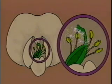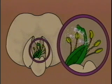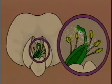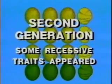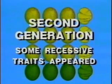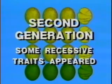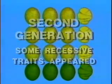The next step was to plant these seeds and let the plants that grew from them self-pollinate or inbreed. This would produce a second generation of seeds. As expected, recessive traits appeared in some of these seeds.